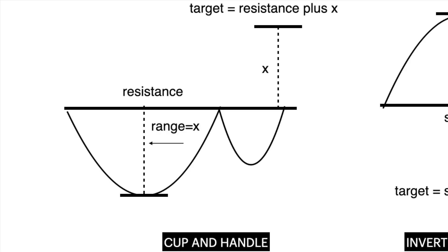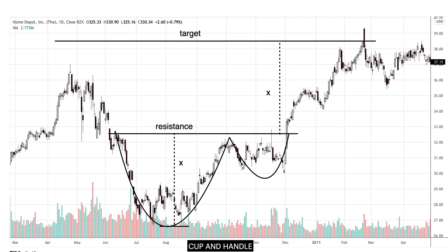The cup and handle pattern is a bullish continuation pattern that looks like a cup with a handle. It is a consolidation pattern that materializes on a price breakout from the handle's resistance on volume above the 20-day average. Home Depot Inc. shows a cup and handle pattern. The breakout from the pattern led to the price target, which is computed as the breakout point plus the cup range X.